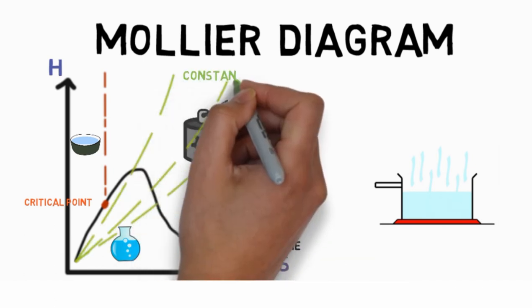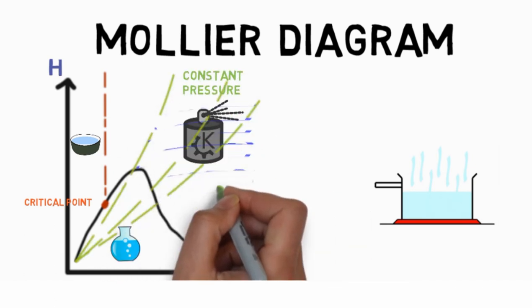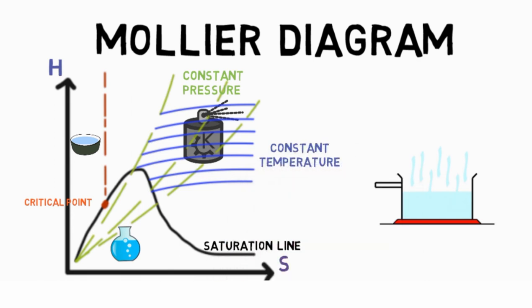The vertical lines are all constant pressure lines and horizontal ones are all constant temperature lines. The lines with a negative slope below the saturation line are dryness fraction lines.